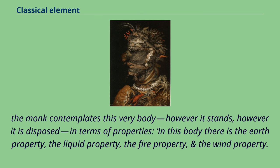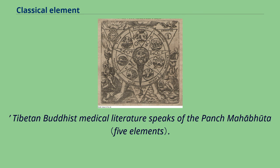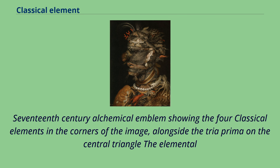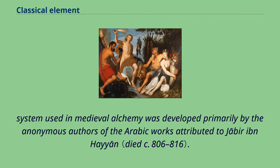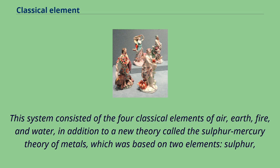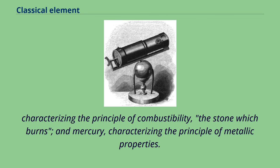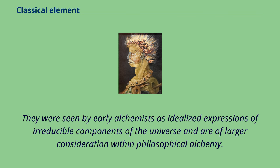Tibetan Buddhist medical literature speaks of the Pancha Mahabhuta. A 17th century alchemical emblem shows the four classical elements in the corners of the image, alongside the tria prima on the central triangle. The elemental system used in medieval alchemy was developed primarily by the anonymous authors of the Arabic works attributed to Jabir ibn Hayyan. This system consisted of the four classical elements of air, earth, fire, and water, in addition to a new theory called the sulfur-mercury theory of metals, which was based on two elements: sulfur, characterizing the principle of combustibility (the stone which burns), and mercury, characterizing the principle of metallic properties. They were seen by early alchemists as idealized expressions of irreducible components of the universe and are of larger consideration within philosophical alchemy.